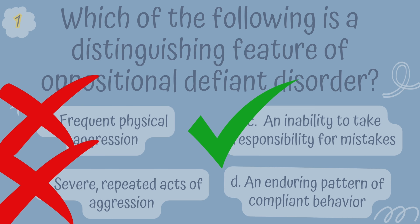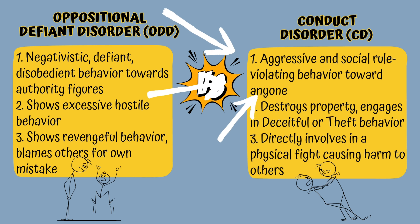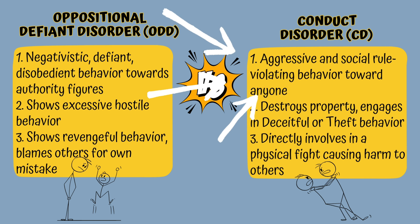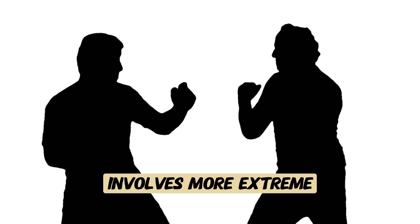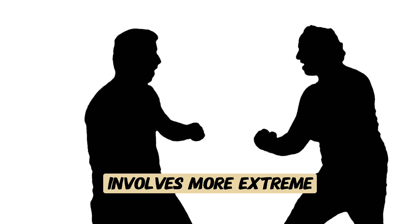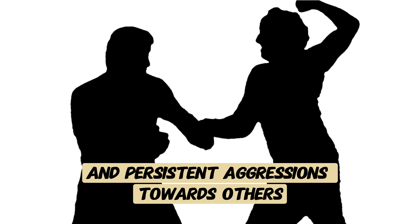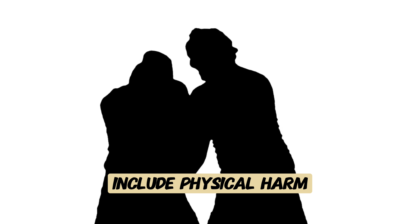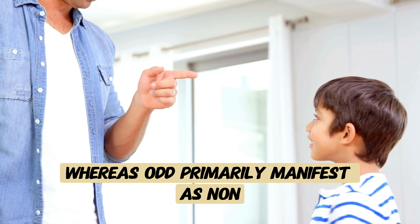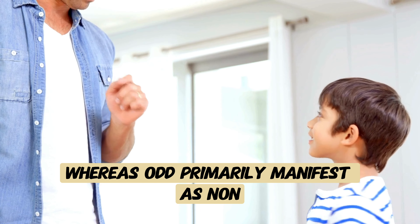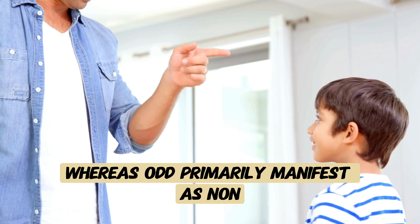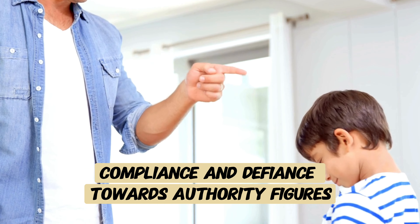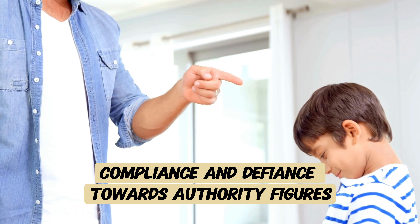Option B, Severe Repeated Acts of Aggression, again aligns more closely with Conduct Disorder rather than ODD. Conduct Disorder involves more extreme and persistent aggression towards others, including physical harm, whereas ODD primarily manifests as noncompliance and defiance towards authority figures.